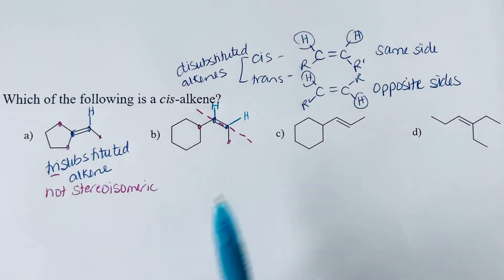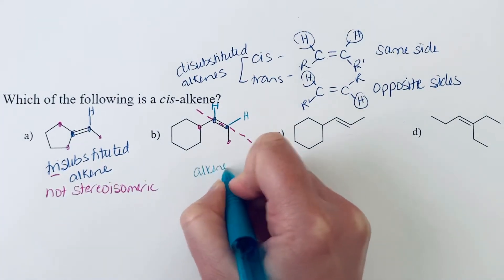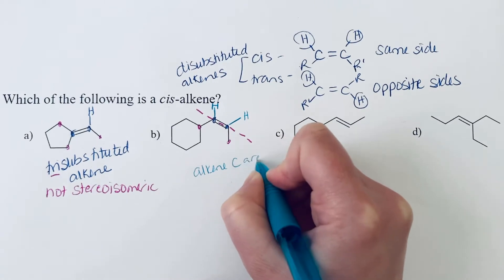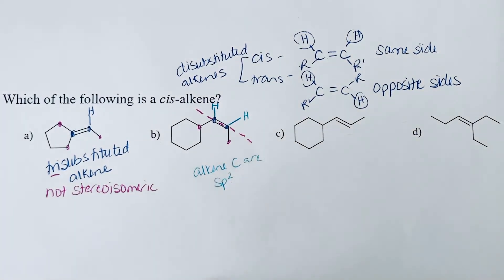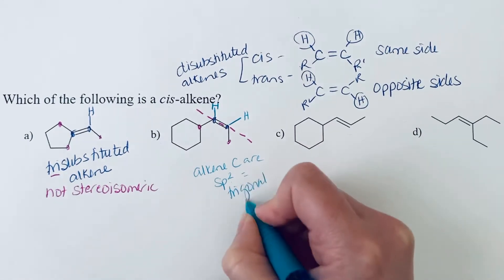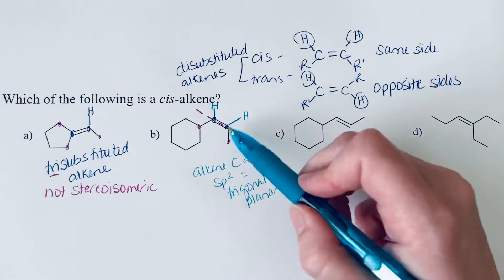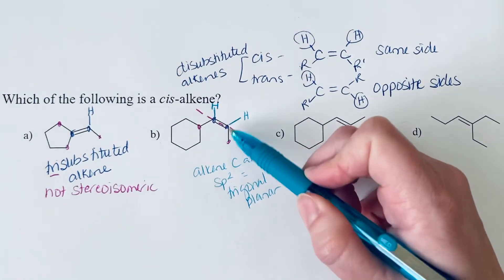And so you might ask, how do we know what angle to put those at? So we need to remember that our alkene carbons are sp2 hybridized. So that means that they are trigonal planar.